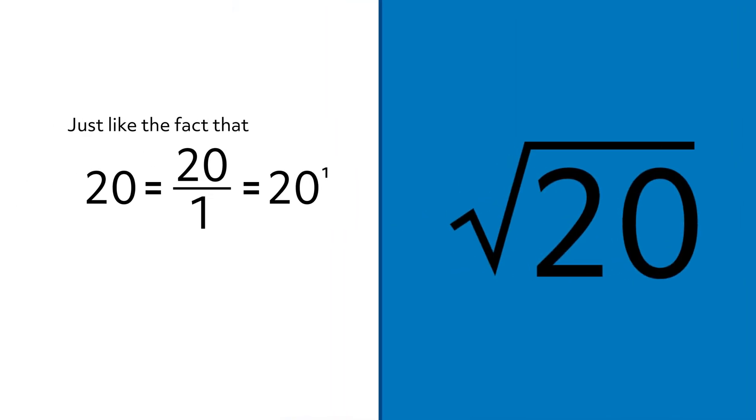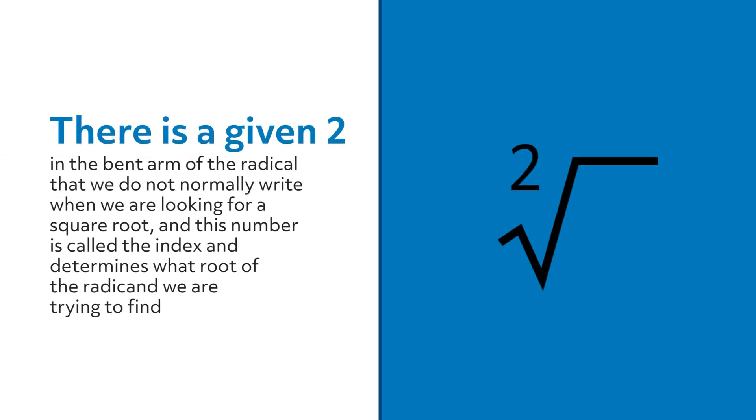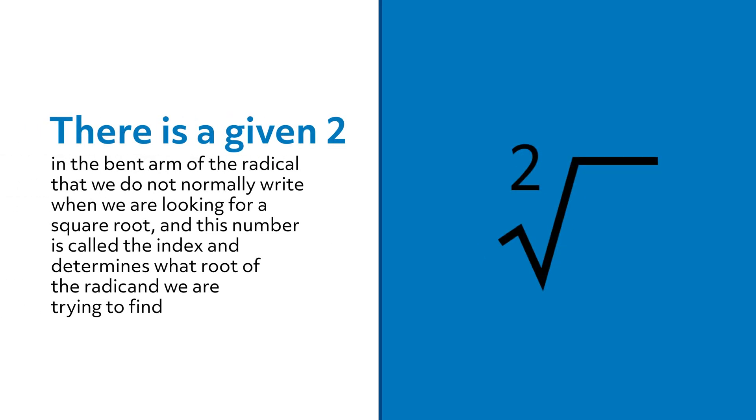Just like the fact that 20 is the same as 20 over 1 or 20 to the first power, but we don't write that 1 because it's given, in square roots there's something similar. There is a given 2 in the bent arm of the radical that we do not normally write when we are looking for a square root. This number is called the index and it determines what root of the radicand we are trying to find.